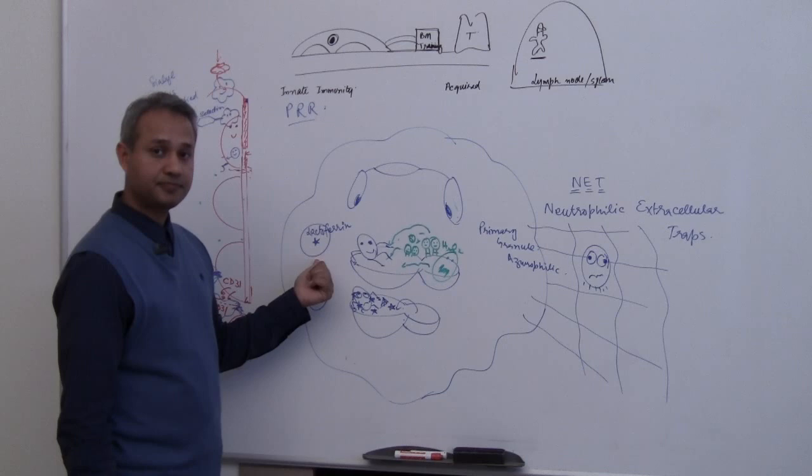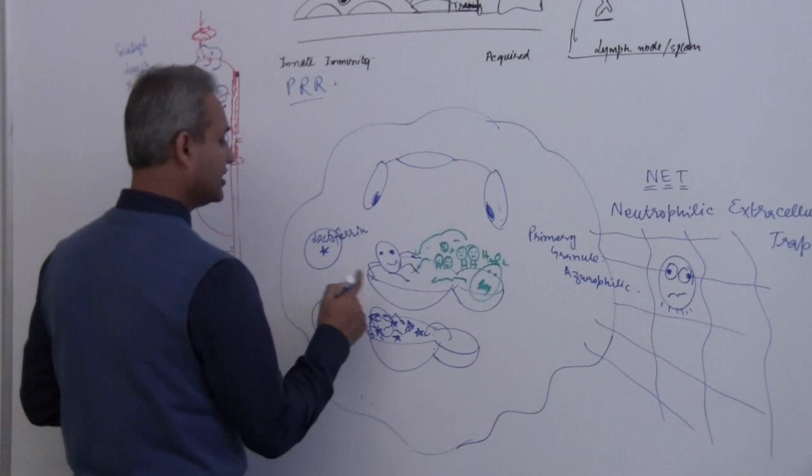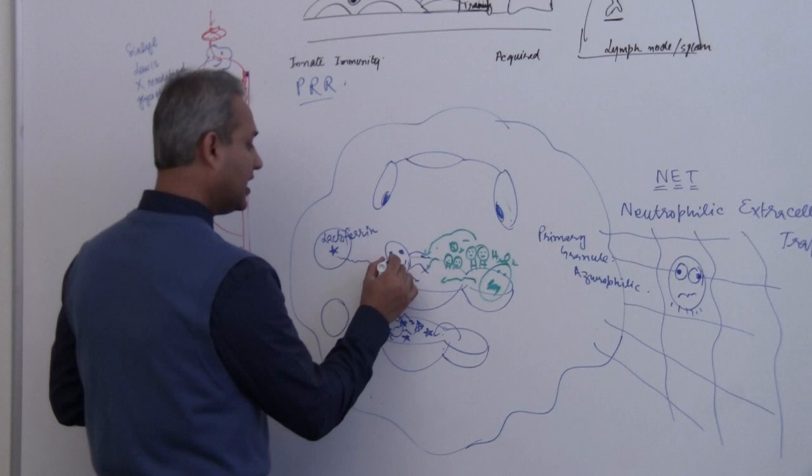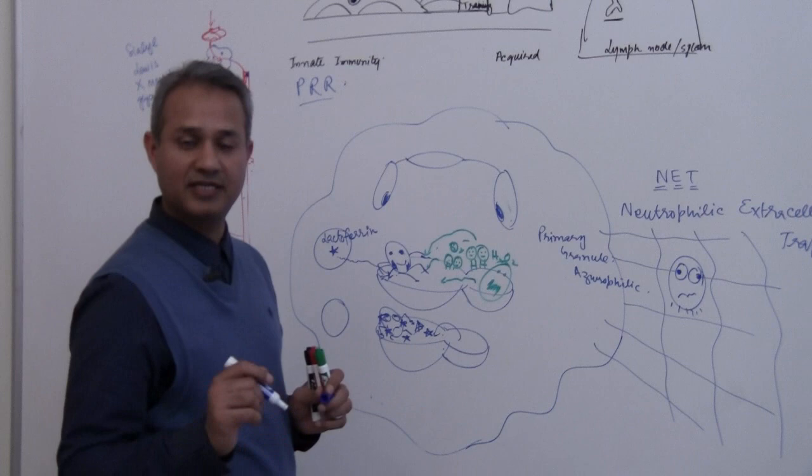So keeping the same note, here is the lactoferrin, what does lactoferrin do? So it is not really clear exactly how it works but what they say is that the lactoferrin when that goes into this phagosome, it pulls the iron out of the bacteria.